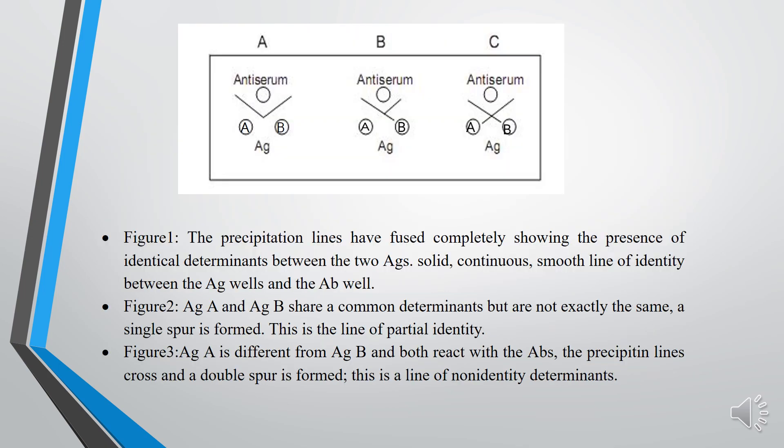The following pattern can be observed from the study. Figure 1: Pattern of Identity. The precipitation lines have fused completely, showing the presence of identical determinants between the two antigens. That is, the antibody cannot distinguish between the two antigens. In other terms, the two antigens are immunologically identical.